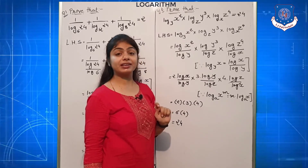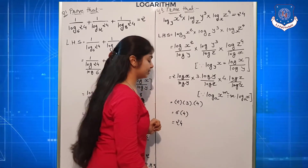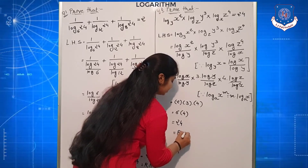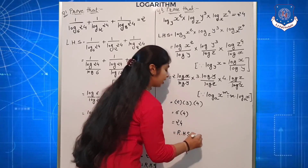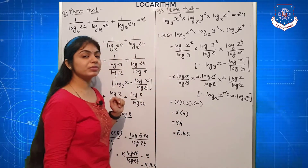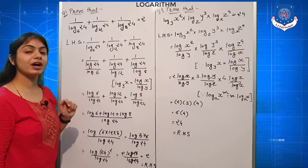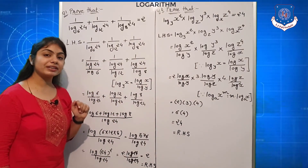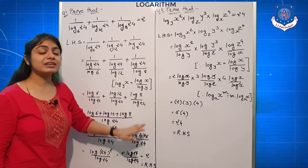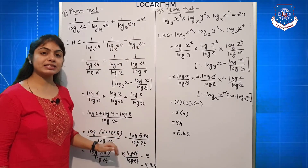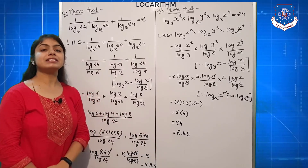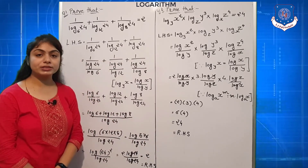The most important thing to write here is RHS. So compulsorily write RHS. In both questions, we have proved that the LHS value equals the given RHS value. Writing RHS at the end is very important to complete the solution.